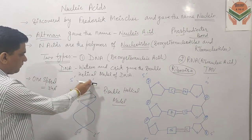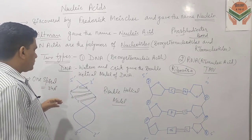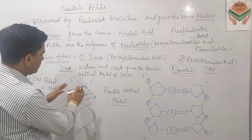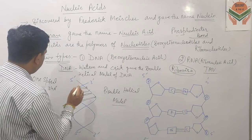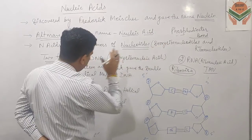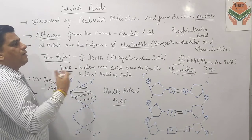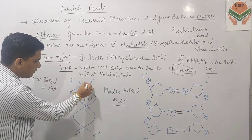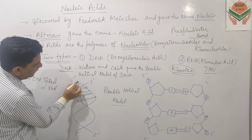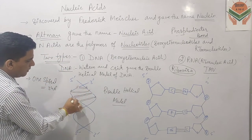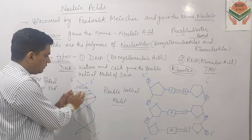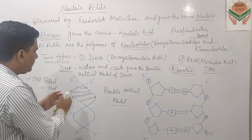इस model के मुताबिक DNA का structure देखें तो DNA has two polynucleotide chains of deoxyribonucleotides। ये N number of deoxyribonucleotides की two chains हैं। एक chain जो है वो run करती है 5' end से 3' end की तरफ, और दूसरी run करती है 3' end to 5' end। यनि these two polynucleotide chains are complementary to each other and anti-parallel to each other।